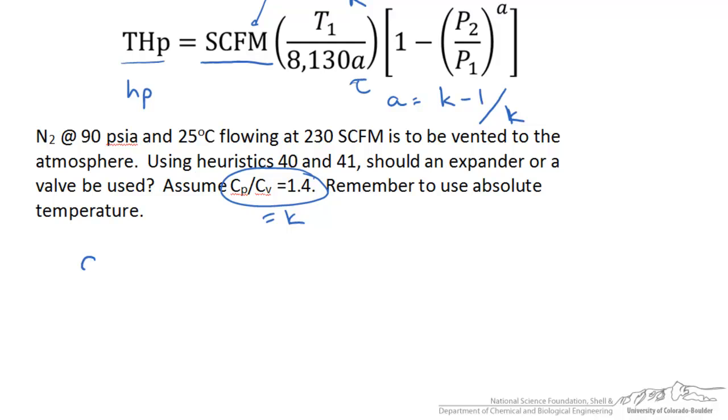First things first, we will calculate our A value since it is used in two places in our equation. This is just going to be K minus 1 over K, otherwise 1.4 minus 1 over 1.4. This gives us 0.286.